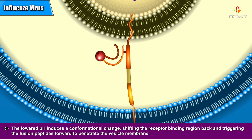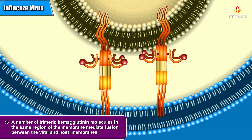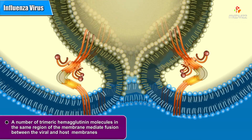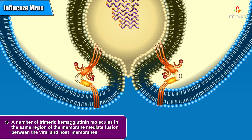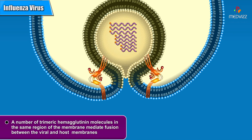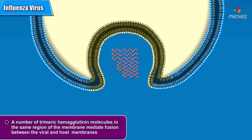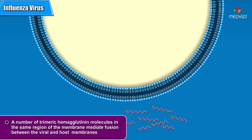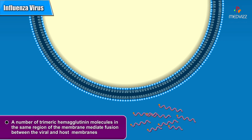The conformational change shifts the receptor binding region back and triggers the fusion peptides forward to penetrate the vesicle membrane. A number of trimeric hemagglutinin molecules in the same region of the membrane mediate fusion between the viral and host membranes. The fusion process expels the contents of the virus into the host cytoplasm.